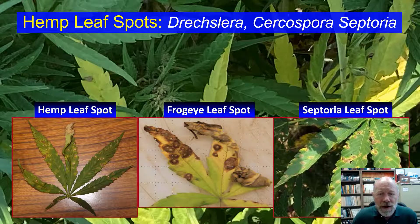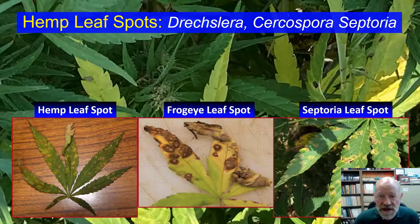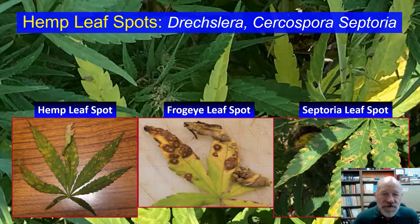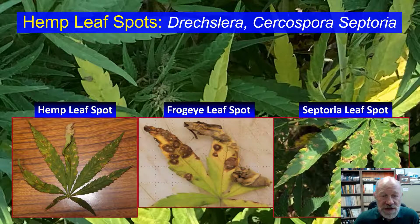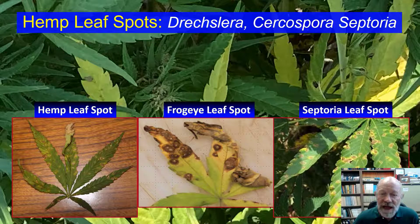Leaf spot pressure has seemed significantly lower in 2020 compared to 2019. We've seen very little leaf spot disease pressure in our field tests at Blackstone. So far, leaf spots have been much more rare than in 2019, when lots of spots showed up soon after transplanting and just seemed to get worse and worse all season, although never causing defoliation. Hemp pathologists are currently thinking that these leaf spots may be ugly, but may not cause any economic loss until they get so numerous that leaves die and fall off the plant.